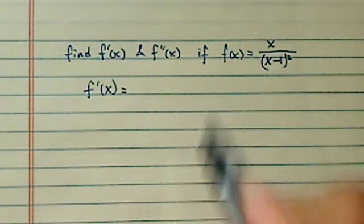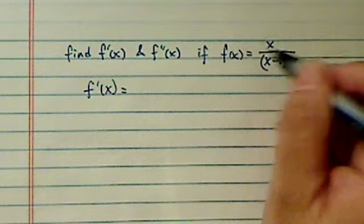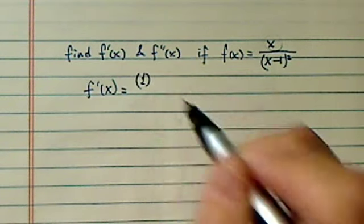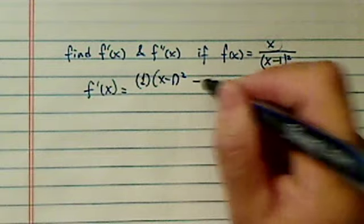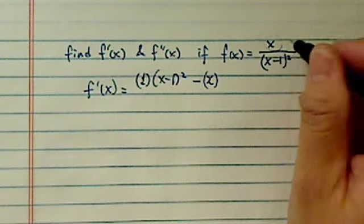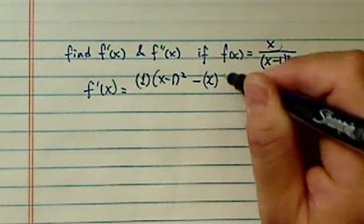We're going to use the quotient rule here. First derivative equal to derivative of the first one, which is 1, x minus 1 squared, so leave the bottom alone, minus the derivative of the second one, leave the first one alone.